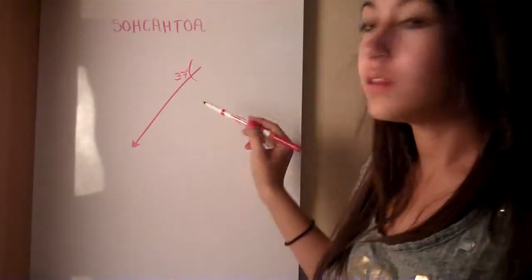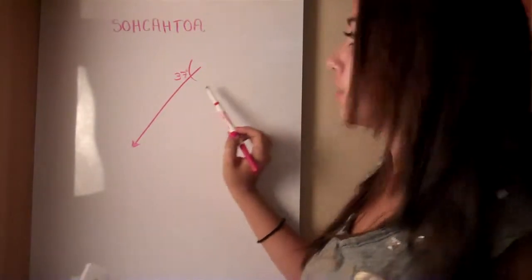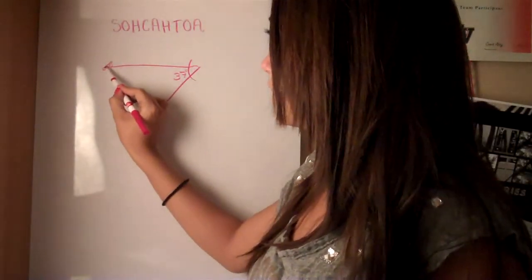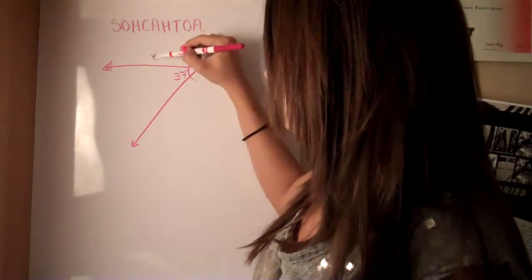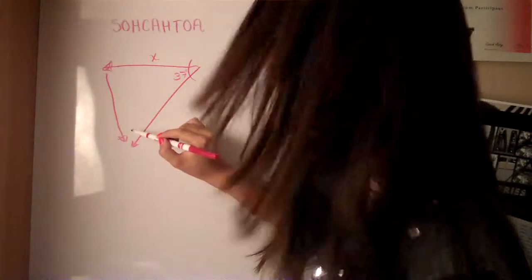And it gives you this vector with an angle of 37 degrees and you have to break it up into its x and y components. So, that's x. And that's y.